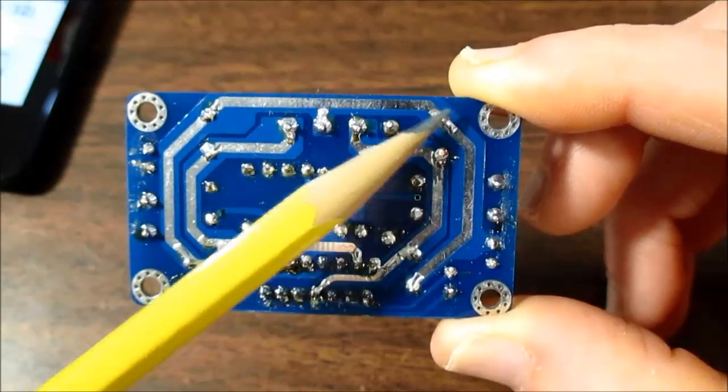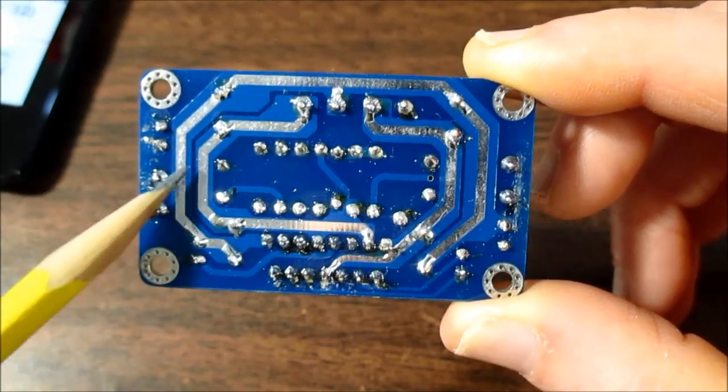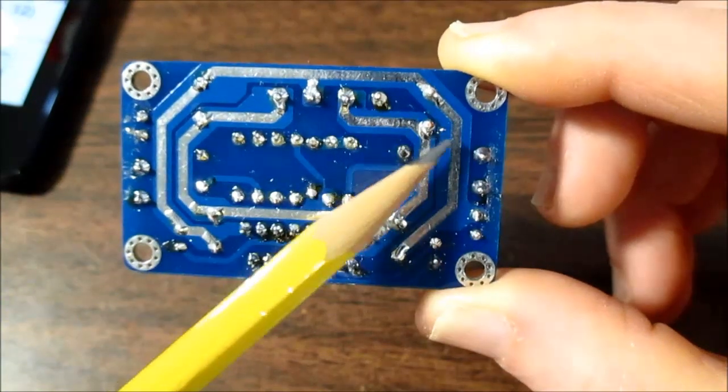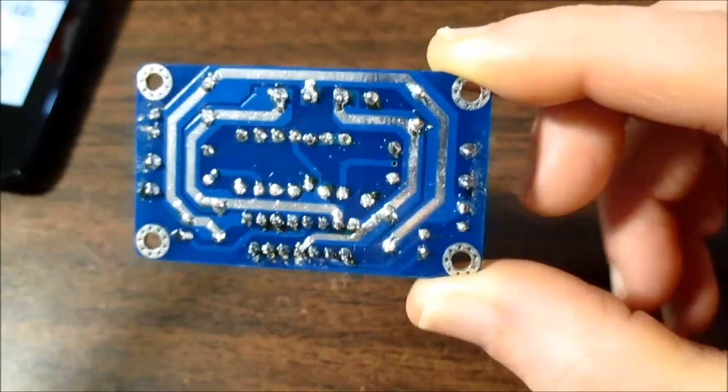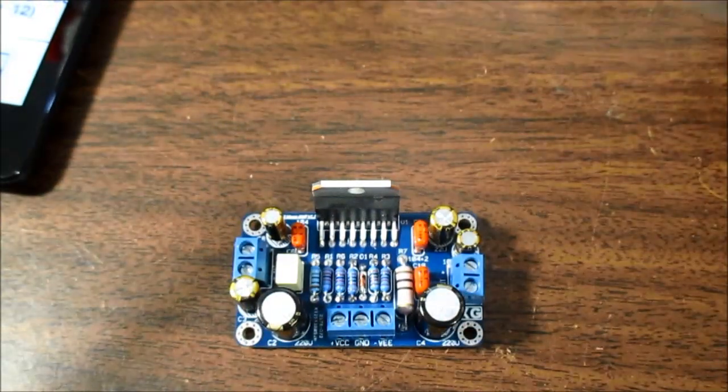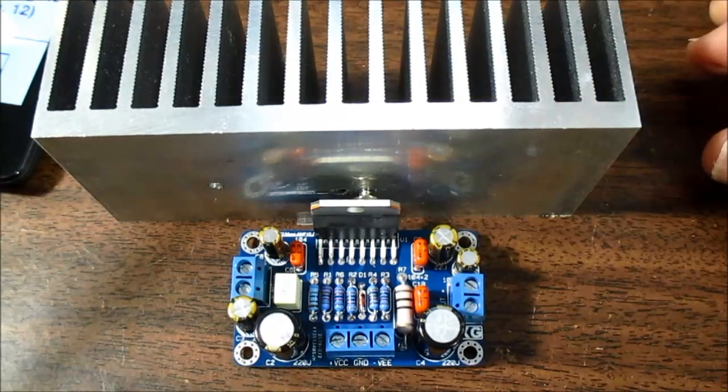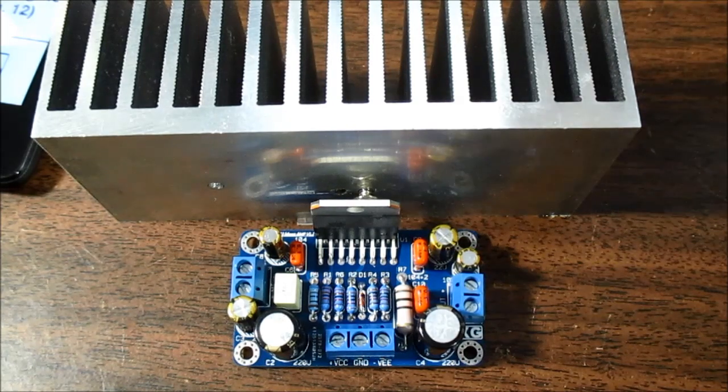And you probably would want to flood fill these traces here, they left them blank so you can put solder on them. But the traces are so wide and thick anyway, I don't think it's necessary. Okay, now I need to put it on a heat sink, and get some wires connected, and power it up for the first time, see what this thing can do.